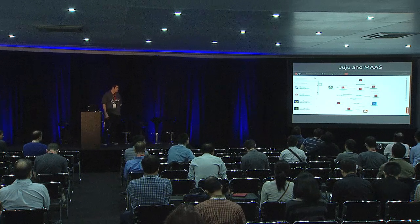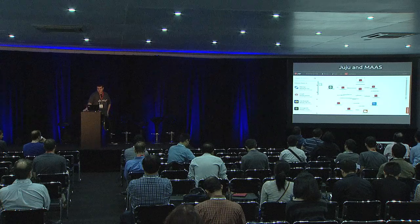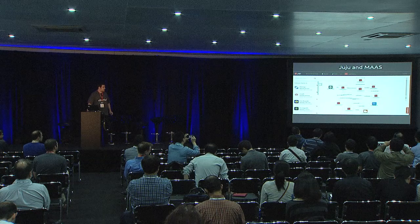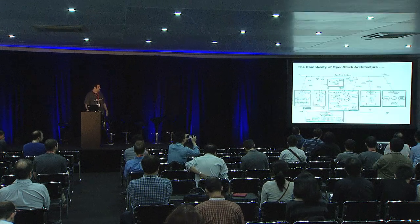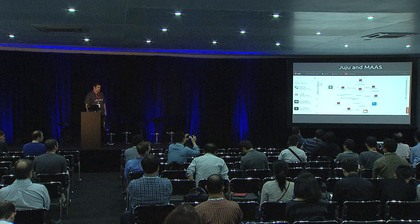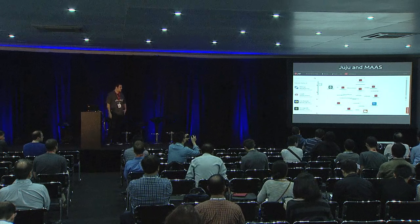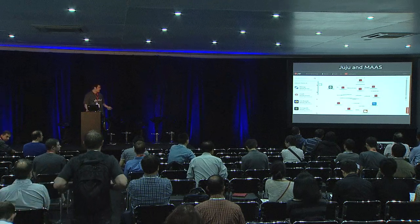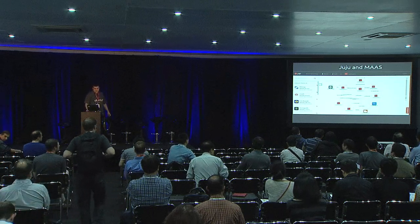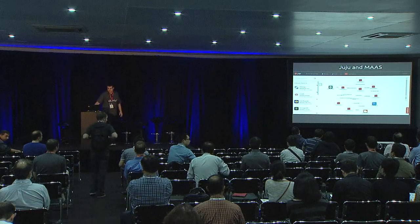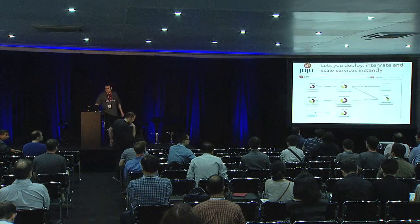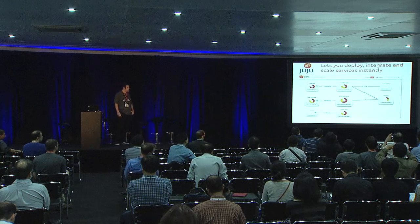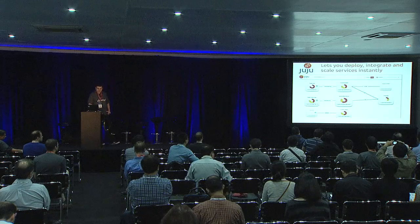If anyone's been to the Ubuntu booth or saw Mark Shuttleworth's keynote on Tuesday, you might have seen something like this — the Juju GUI. It's a tool we use to take a whiteboard architecture and make it a reality. For developers, operations, and DevOps who sit at a whiteboard and spec out what their infrastructure looks like, we're making it easy to do the same within a GUI and translate that to physical or virtual hardware. Juju is an orchestration framework that lets you deploy, integrate, and scale services instantly and easily.